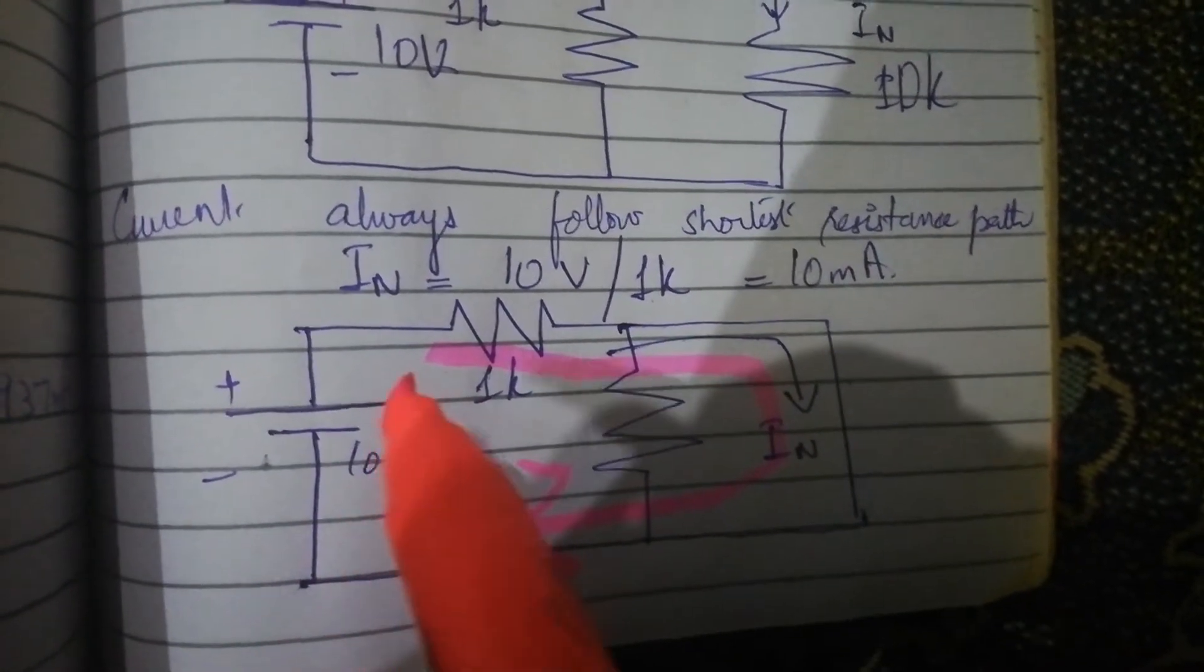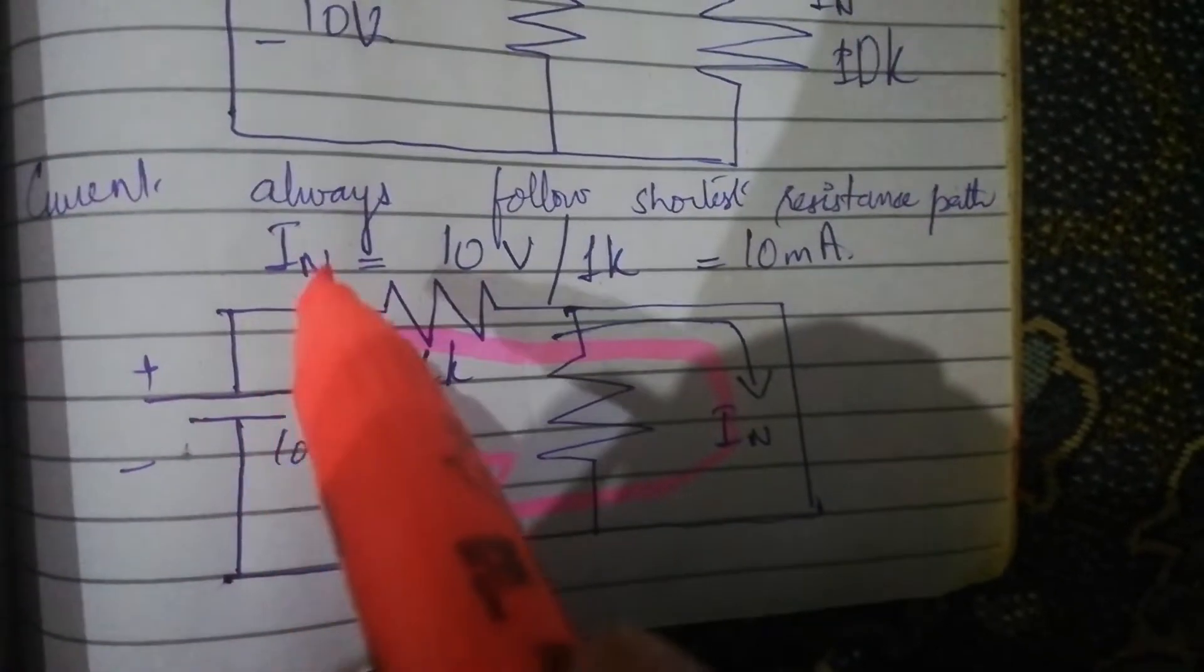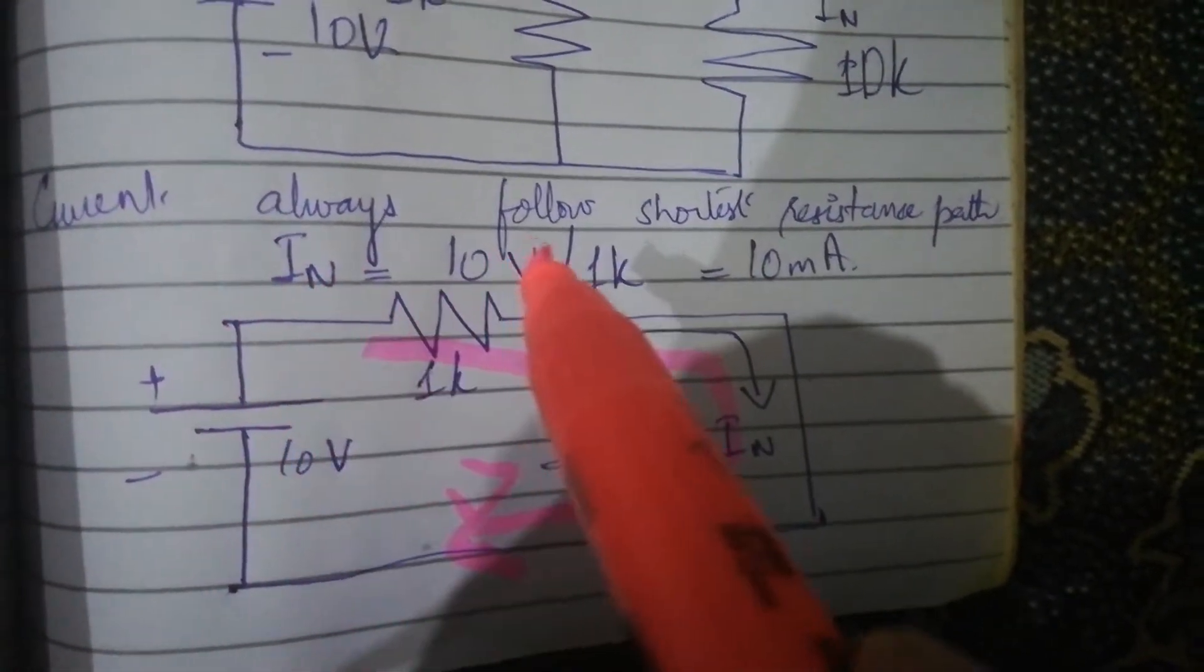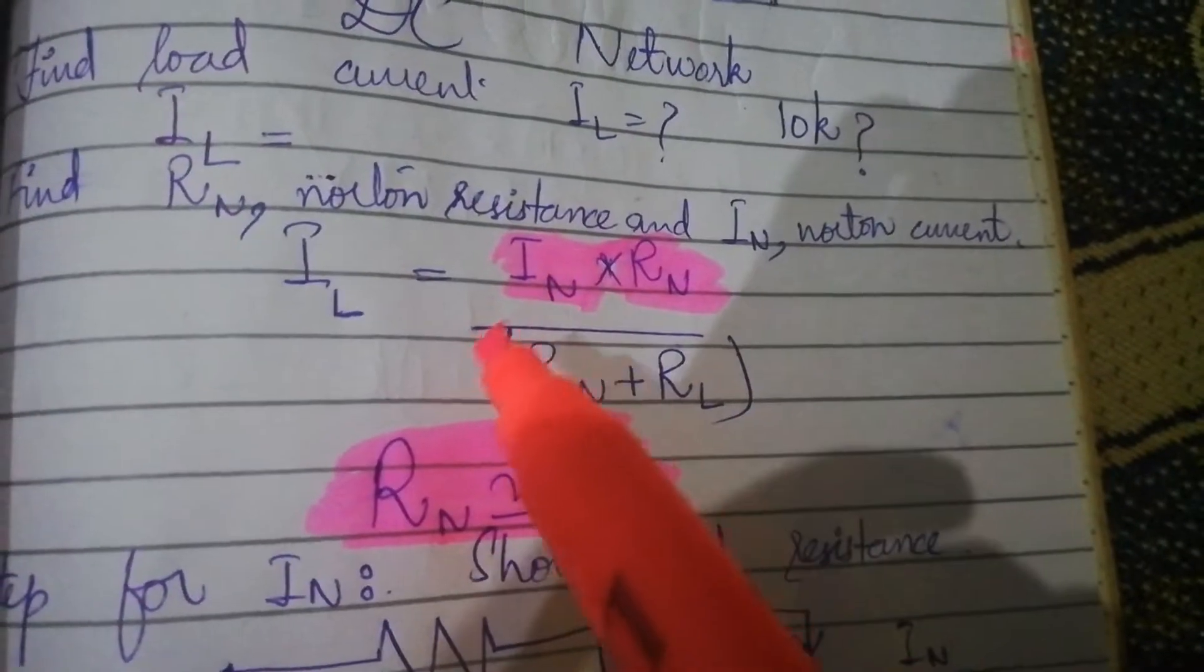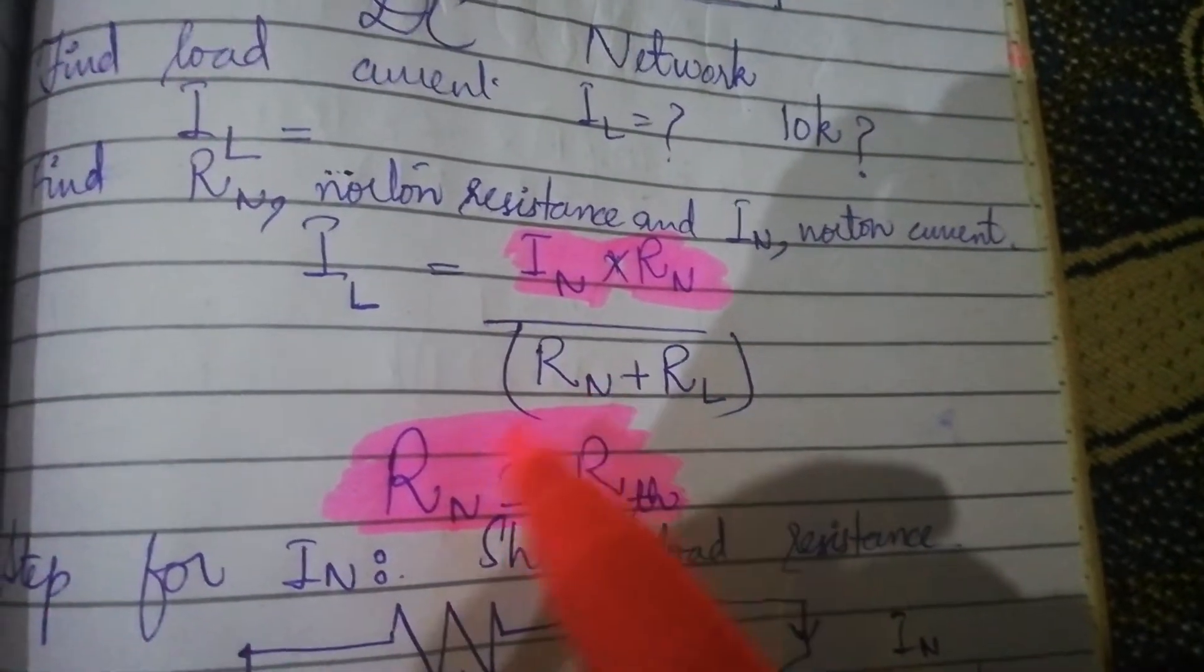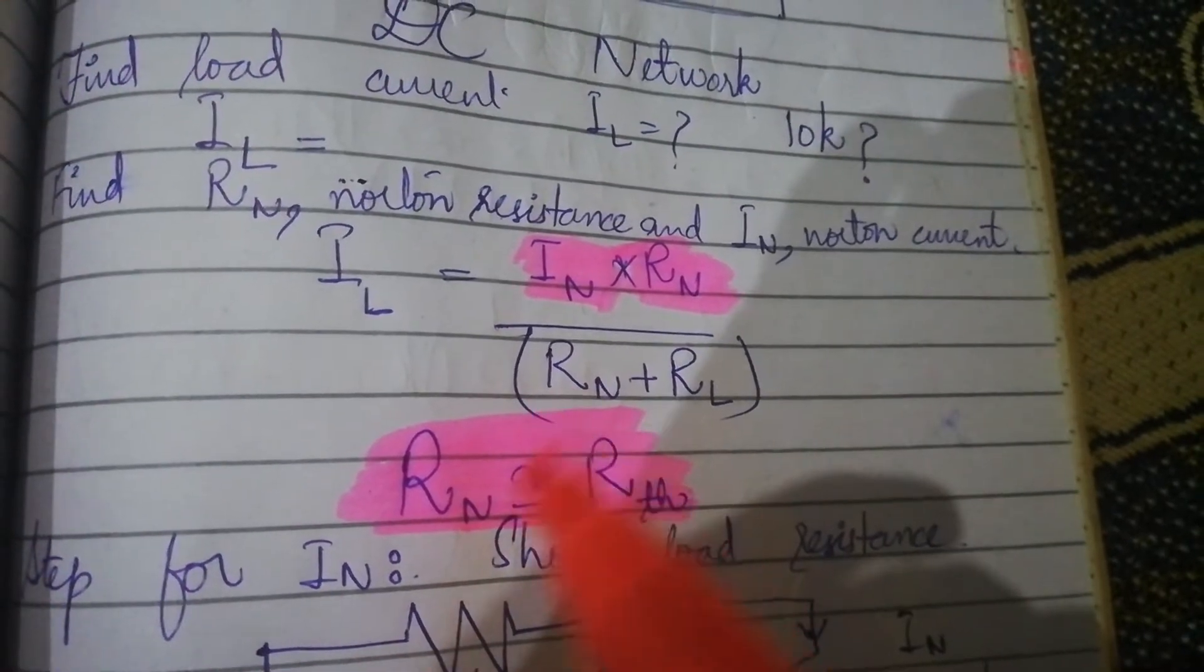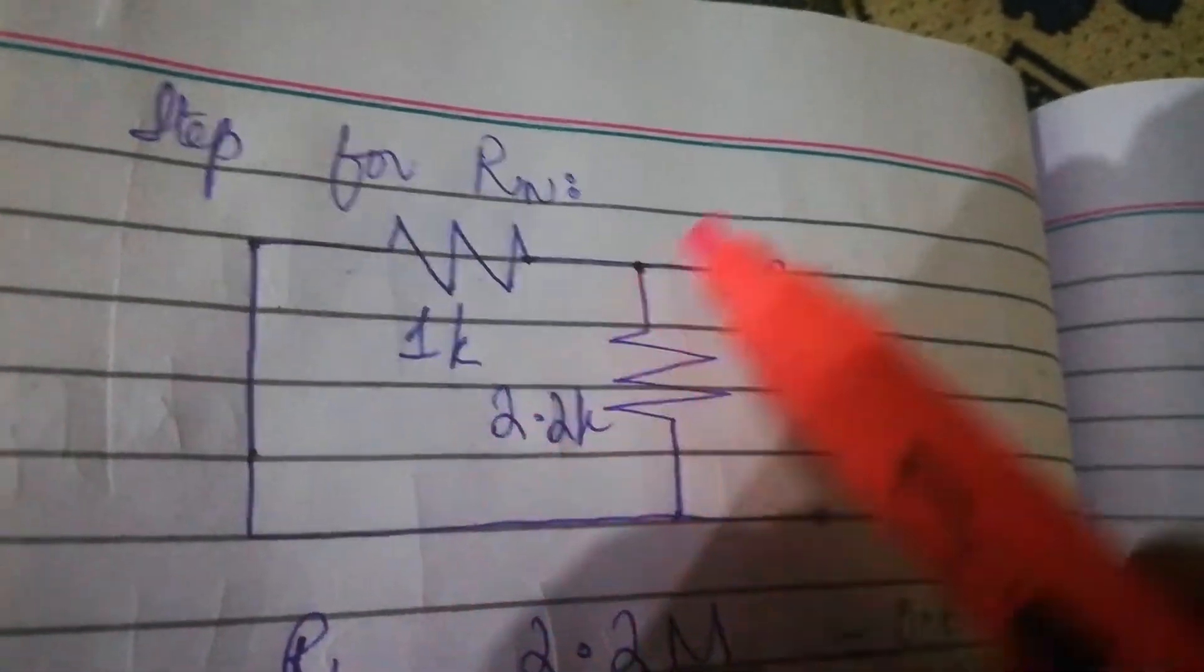Norton current is equal to IN. We know the load resistance. Norton resistance is the way to find out the equivalent resistance. We have 1 to 10 kΩ.